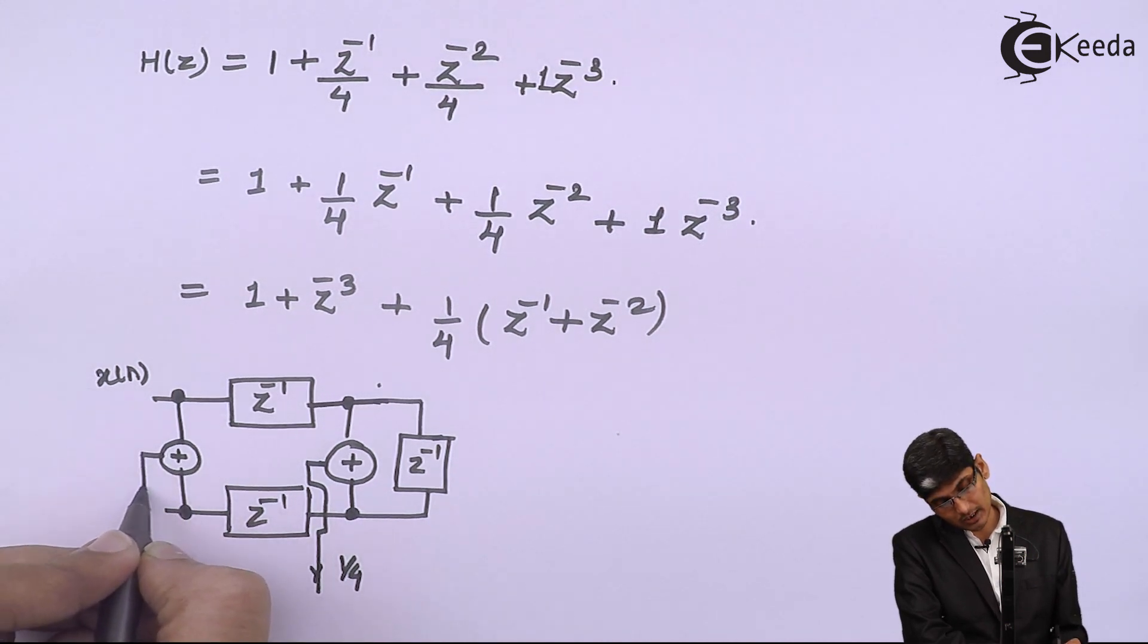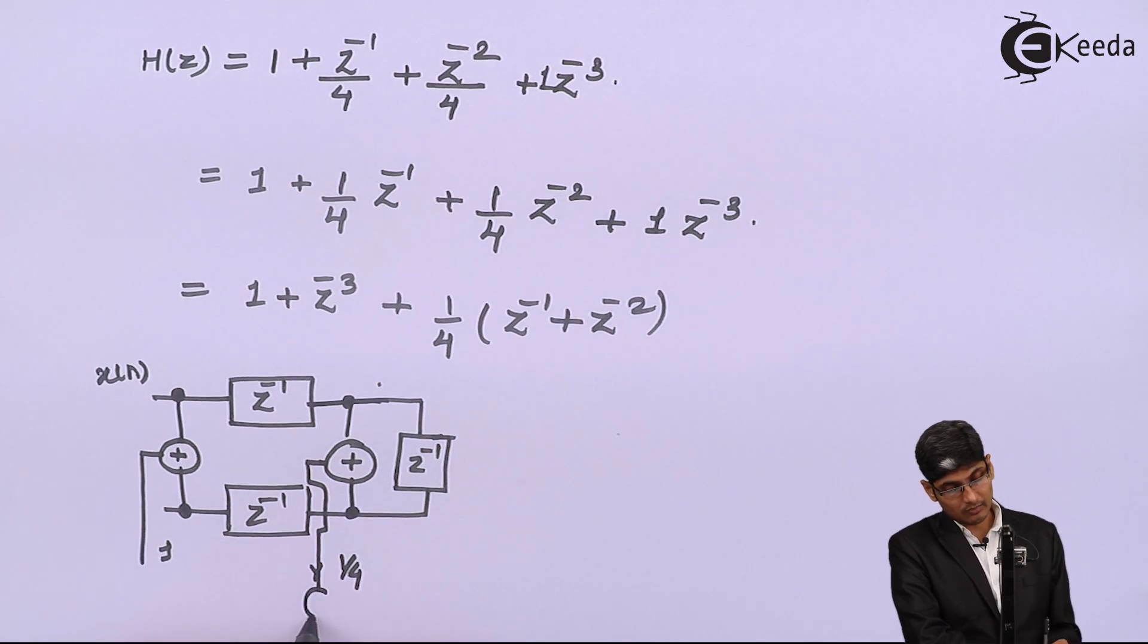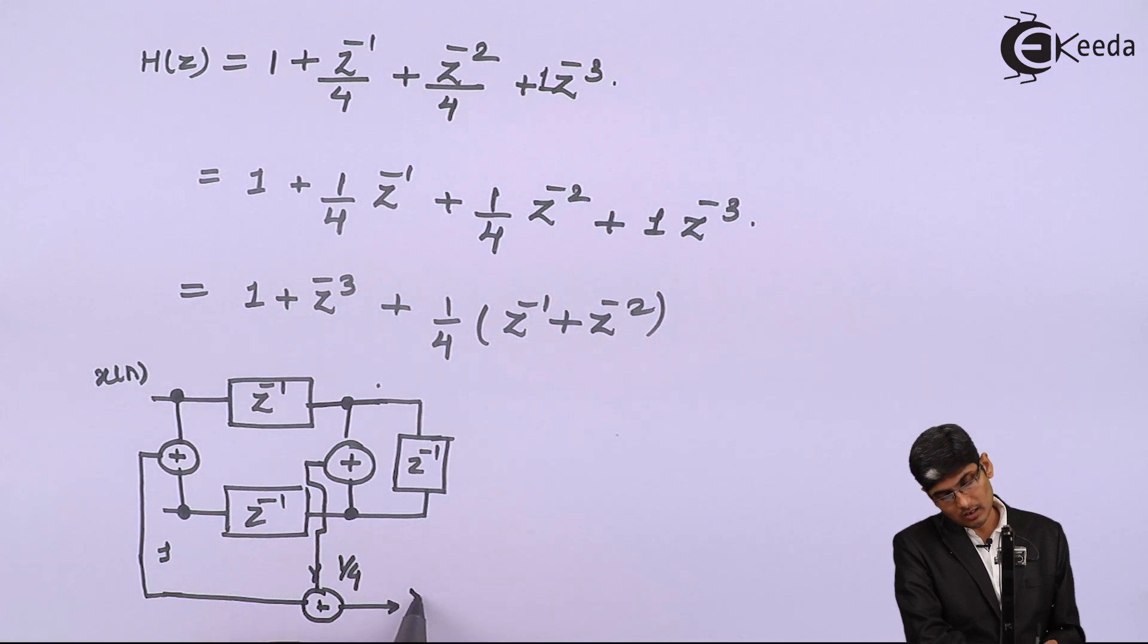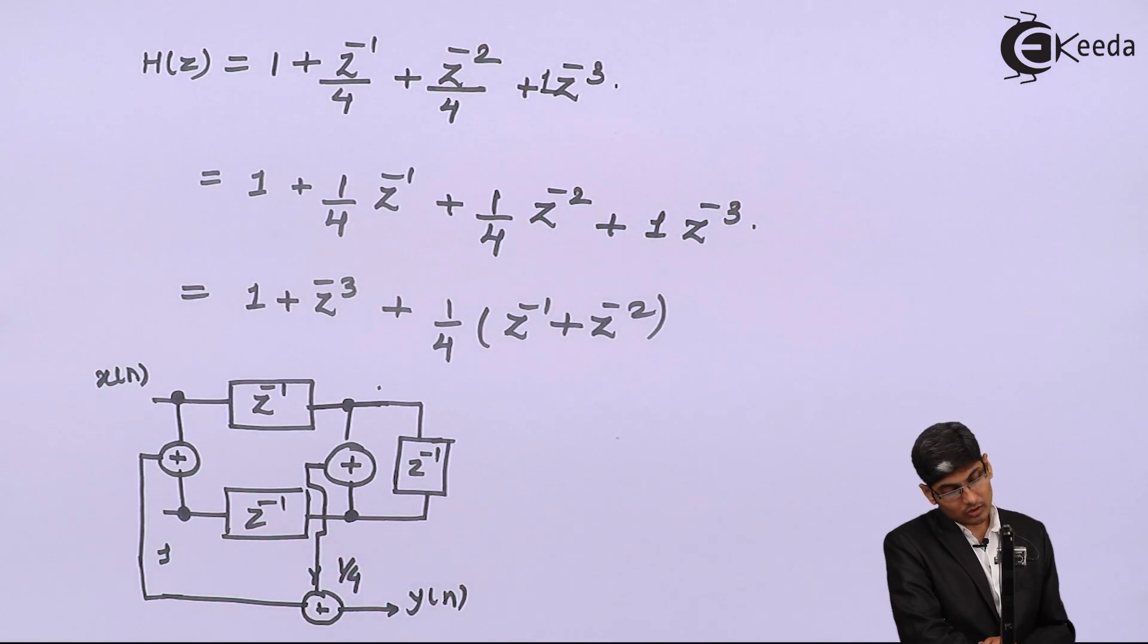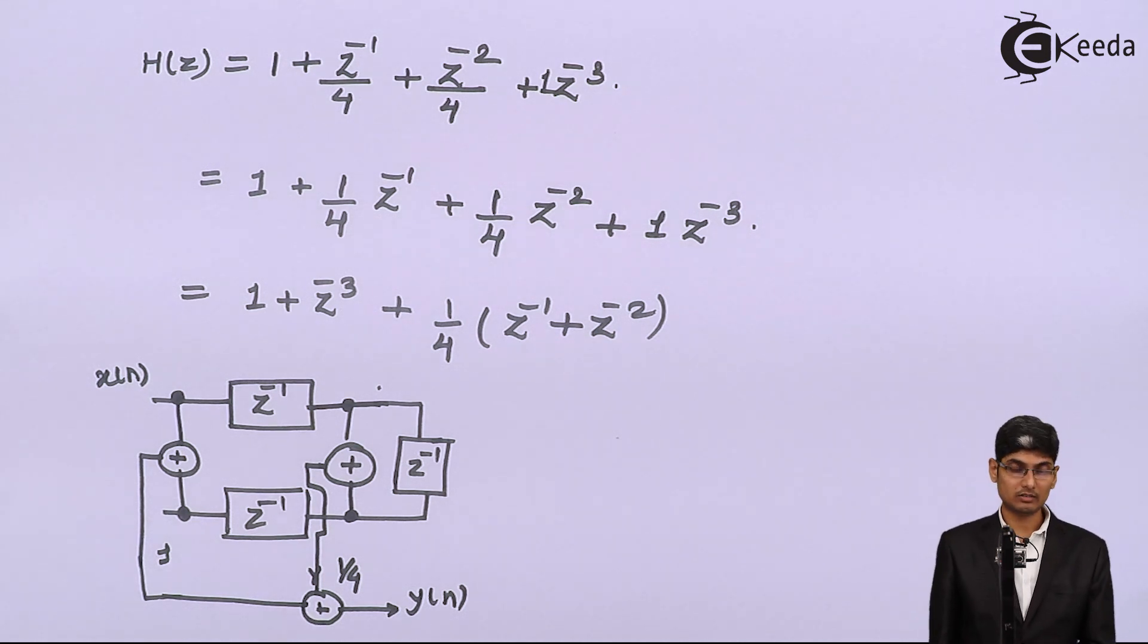Then we will add an adder over there. So this is the basic structure of an even ordered linear phase FIR structure. Thank you.